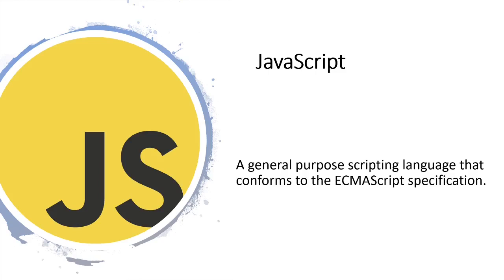So to summarize: ECMA is an organization that creates standards, and ECMAScript — also called ECMA-262 — is the standard created by ECMA for JavaScript. JavaScript is a general purpose scripting language that conforms to the ECMAScript specification.